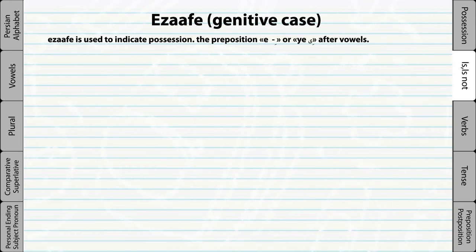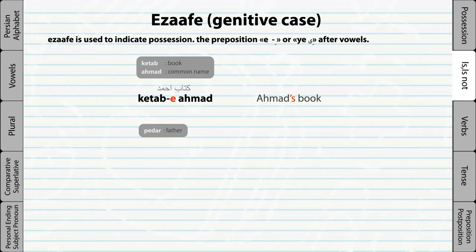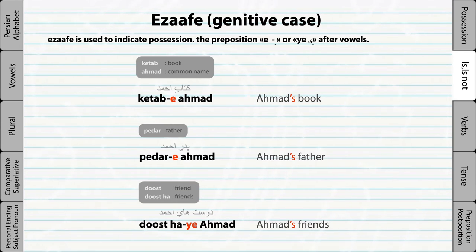Ezafih. In Persian, Ezafih is used for many different purposes. The first one is to indicate possession. When you say 'Ahmad's book,' we say 'Kitabe Ahmad.' The short vowel E indicates the book belongs to Ahmad, so the literal translation would be 'the book of Ahmad.' Another example: 'Pedare Ahmad' means 'the father of Ahmad' or 'Ahmad's father.' And if the last letter is a vowel, we add yeh instead of eh. For example, 'Dostaye Ahmad' means 'the friends of Ahmad.'